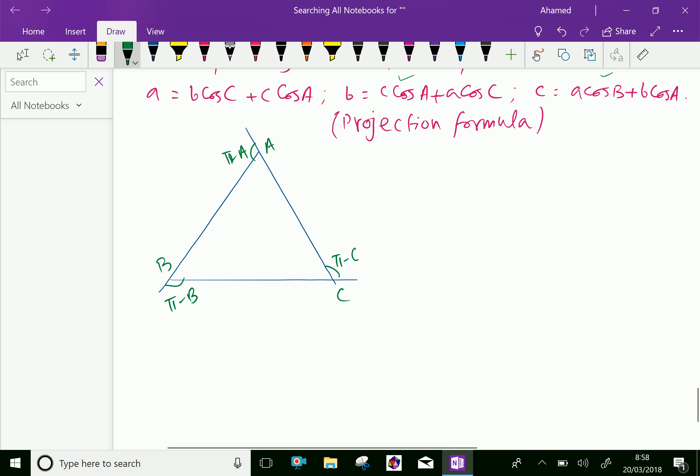And also let here, this is vector a and this vector b, this is vector c. Now by triangle law of addition, we can say here vector a plus vector b plus vector c equals zero.